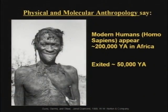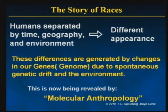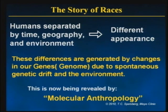If only 100 generations ago your ancestors could have been listening to Christ give a sermon. Physical anthropologists have long stated that out of Africa, 50,000 years ago, came the first humans. They were very dark-skinned, and they ended up all over the world in many places as light-skinned Eurasians. We now know that all these differences are generated by changes in our genes — in our genome — due to spontaneous genetic drift. Our DNA keeps changing; you don't have the exact same DNA now that you had when you were born. It changes between you and your sister, brother, mother, father — and some of these things are inherited. All this is being revealed by molecular anthropology.